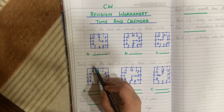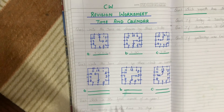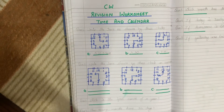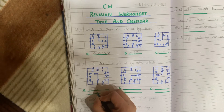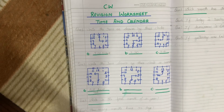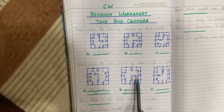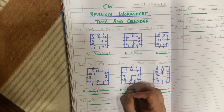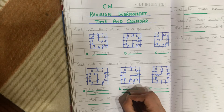Question number 2: write the time shown by these clocks in words. What is the time? It is 10:30. In words, how will we write 10:30? Half past 10 — H-A-L-F half, P-A-S-T past, T-E-N 10. Next, what is the time in this clock? It is 3:30. How will we write 3:30? It is half past 3.